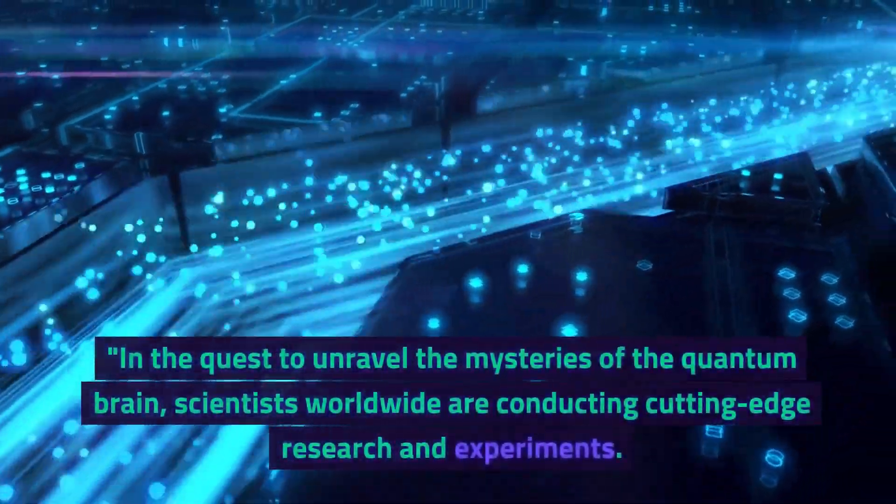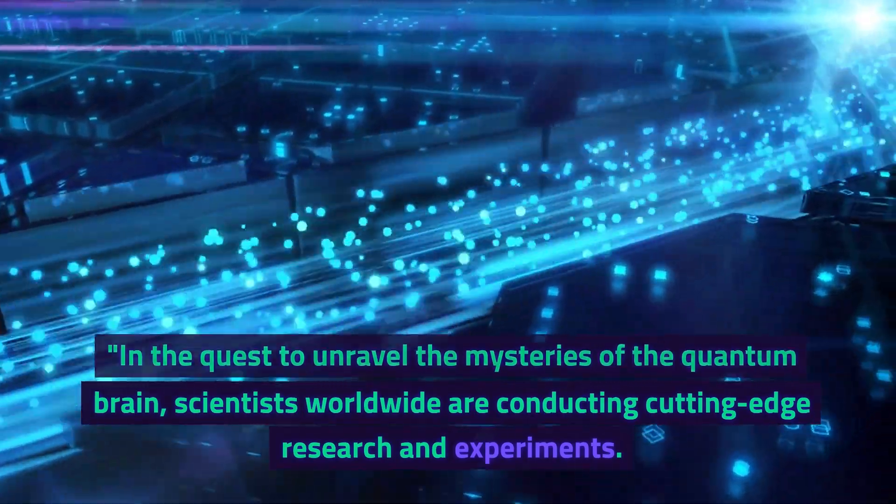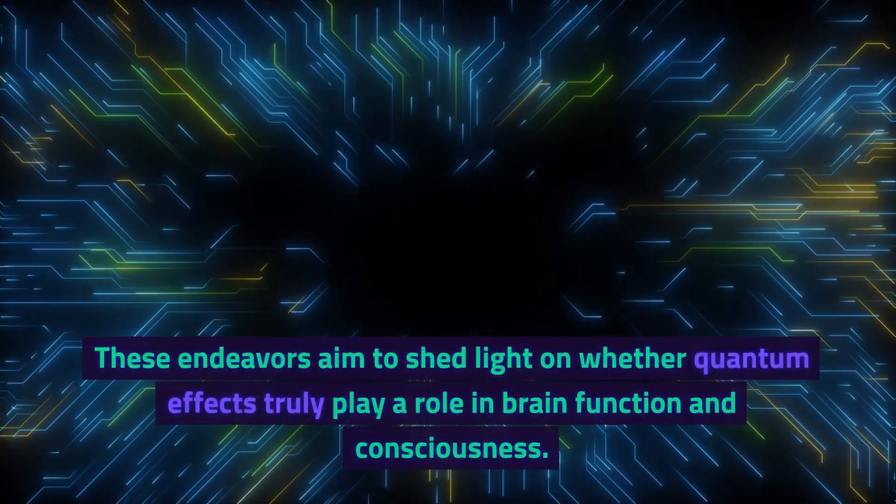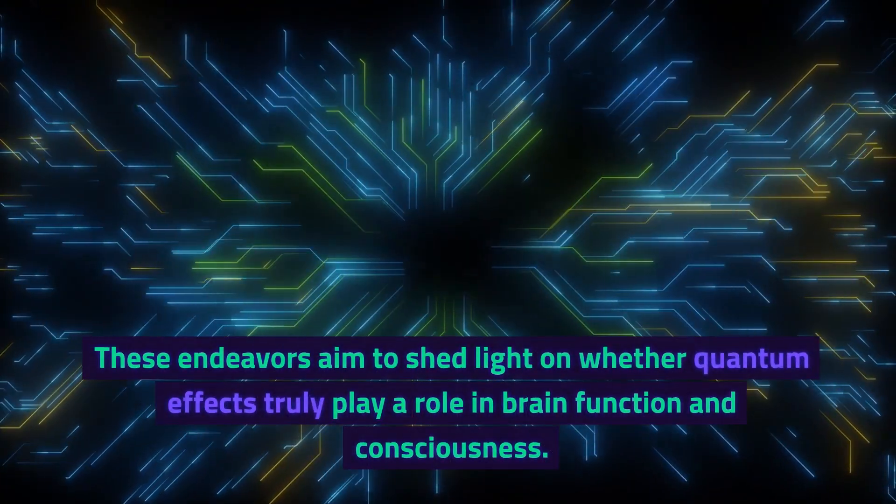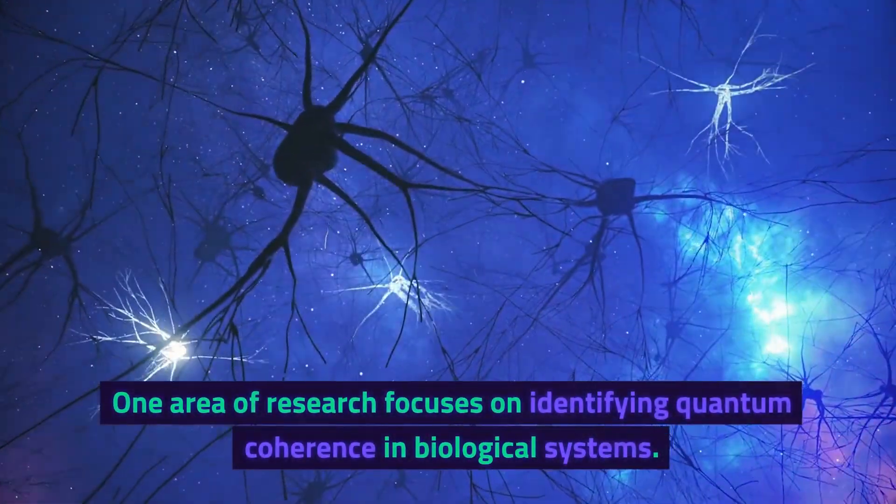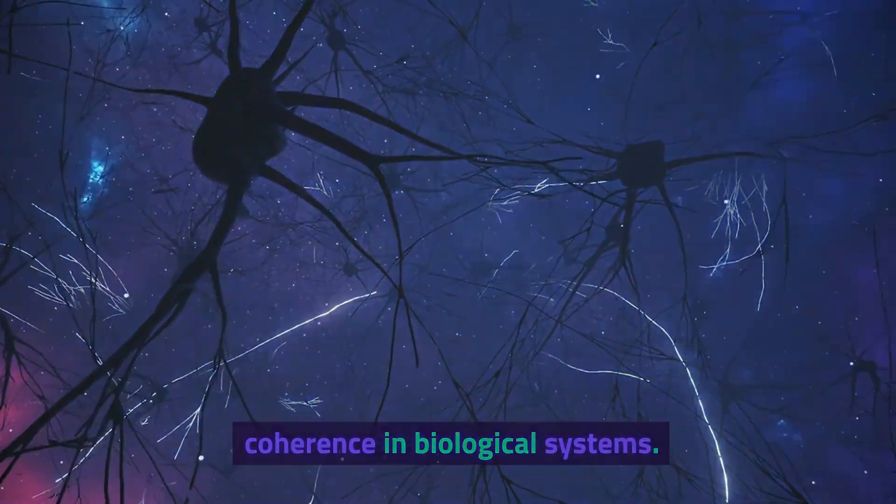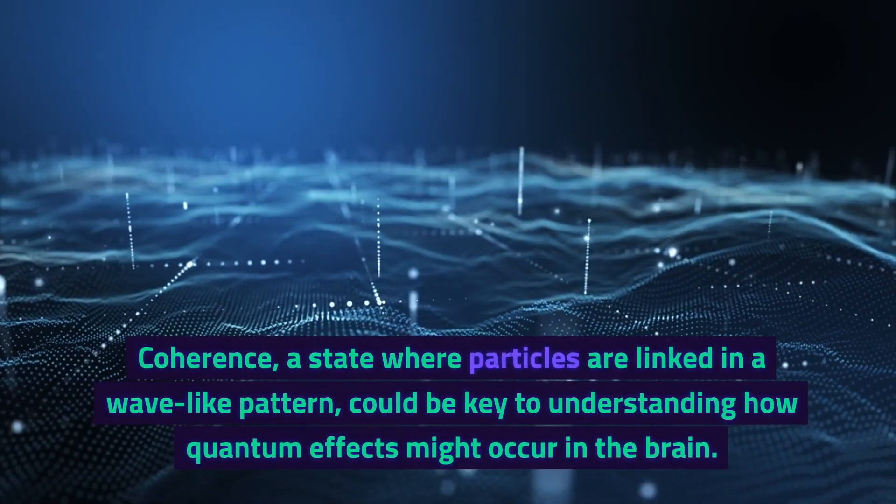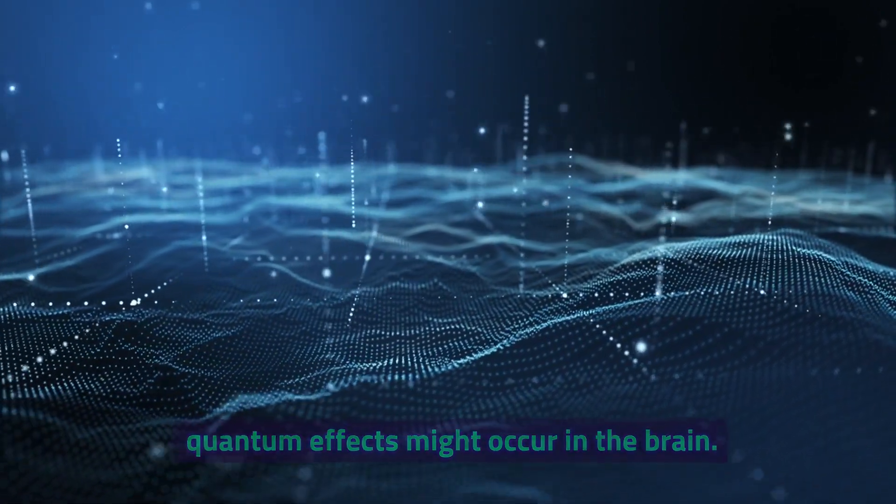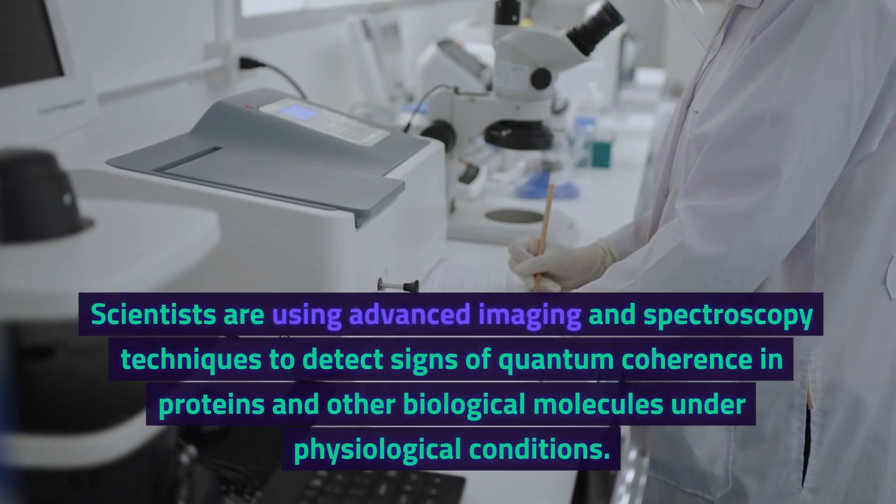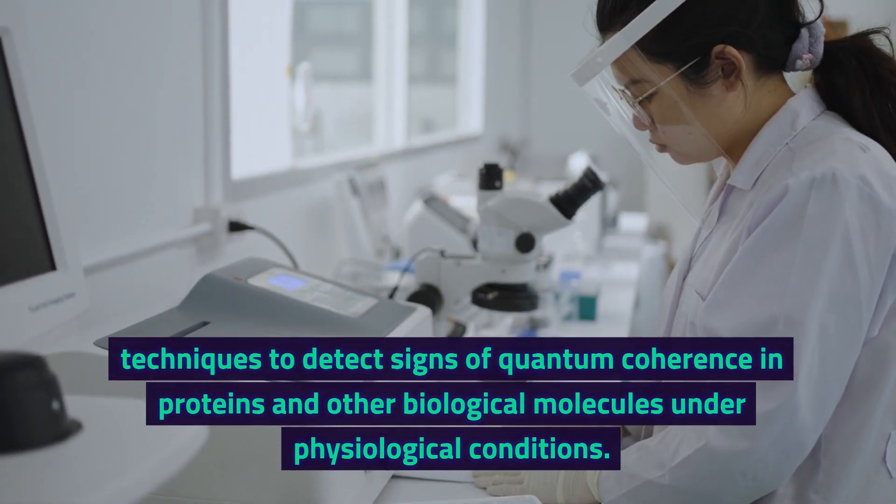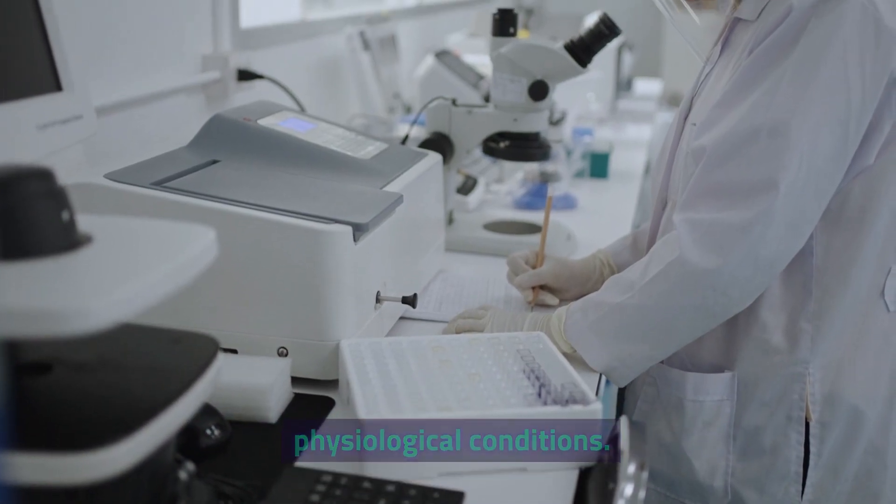In the quest to unravel the mysteries of the quantum brain, scientists worldwide are conducting cutting-edge research and experiments. These endeavors aim to shed light on whether quantum effects truly play a role in brain function and consciousness. One area of research focuses on identifying quantum coherence in biological systems. Coherence, a state where particles are linked in a wave-like pattern, could be key to understanding how quantum effects might occur in the brain. Scientists are using advanced imaging and spectroscopy techniques to detect signs of quantum coherence in proteins and other biological molecules under physiological conditions.